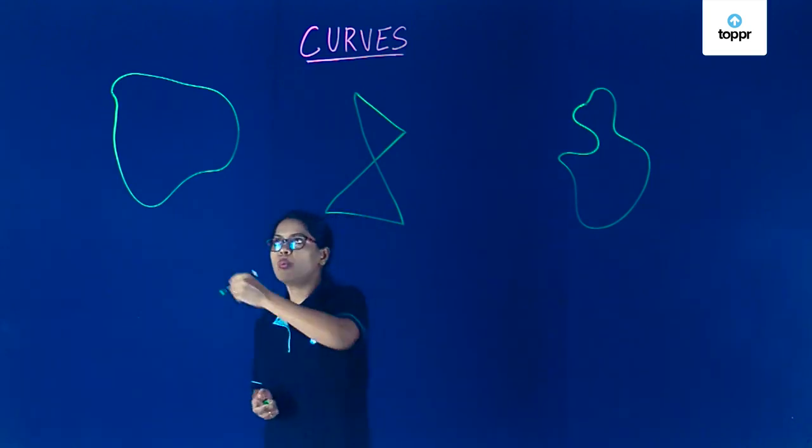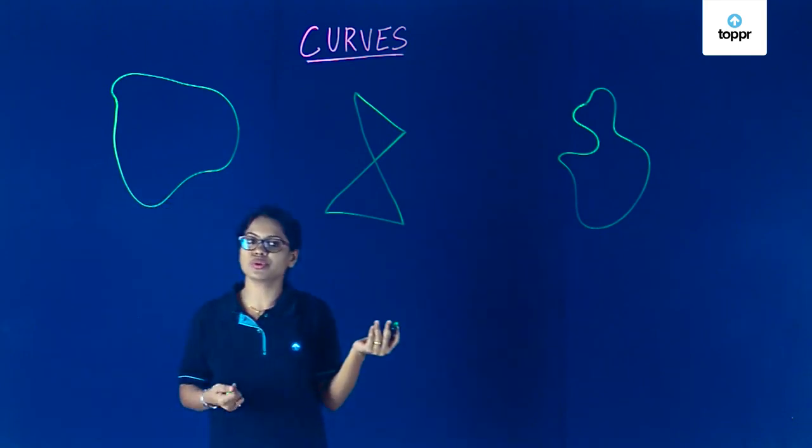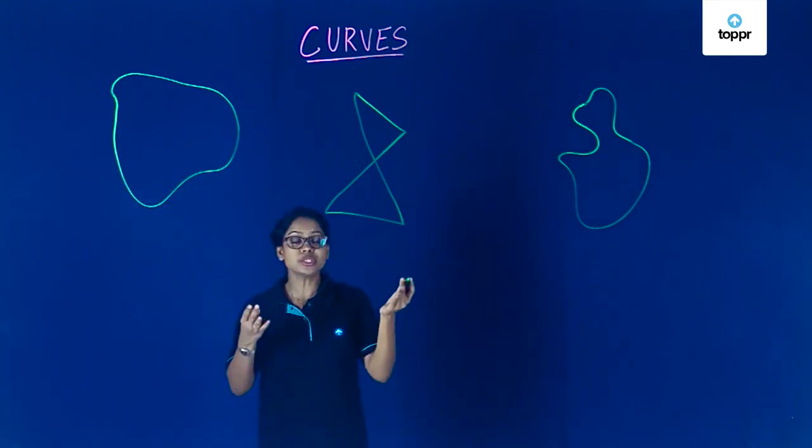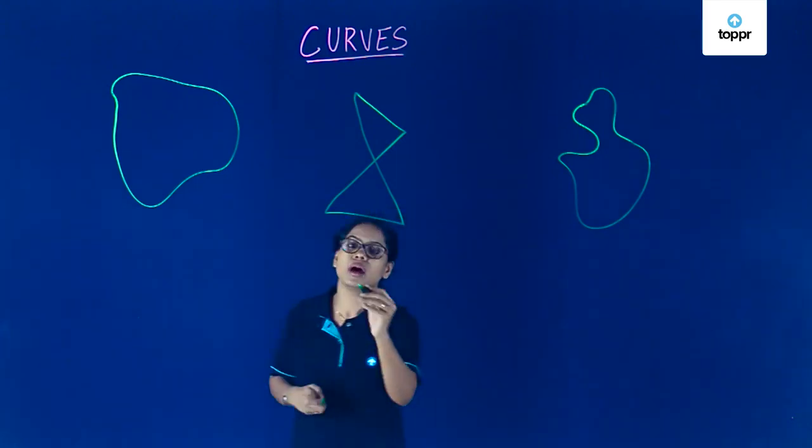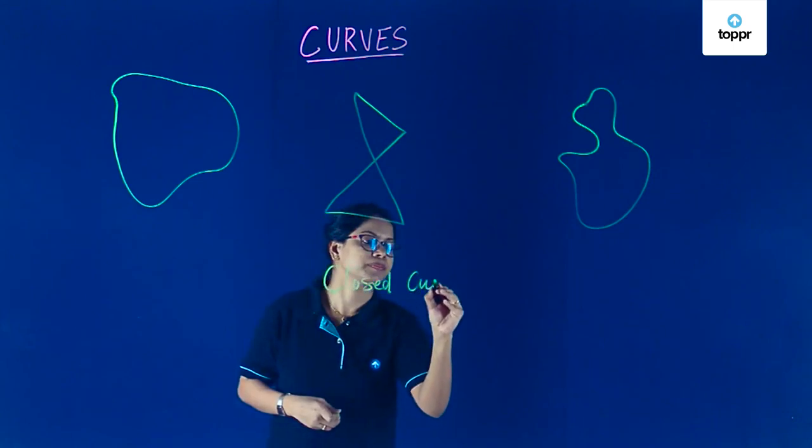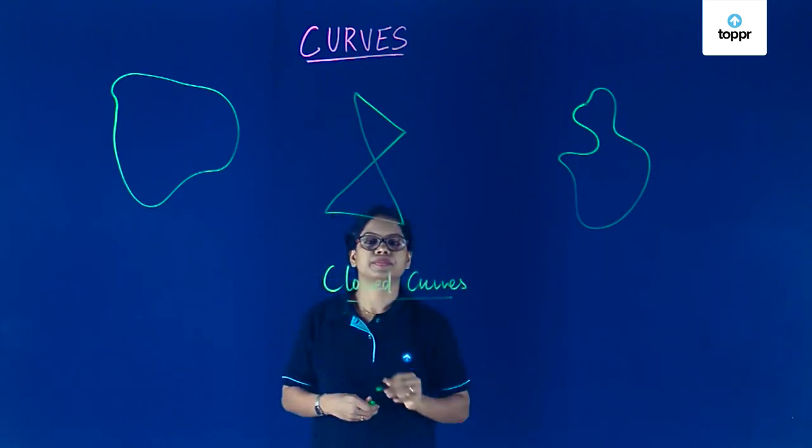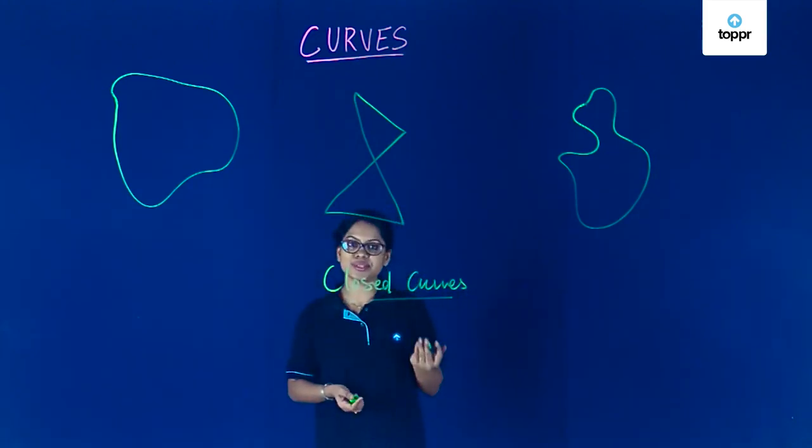So wherever, supposing I started here, I ended at the same place. That's why you cannot see two different points. So such kind of curves where the starting point and the end point are same are also called as closed curves. So closed curves are curves where the starting point and the end point are the same.